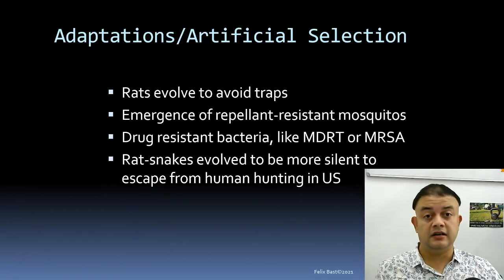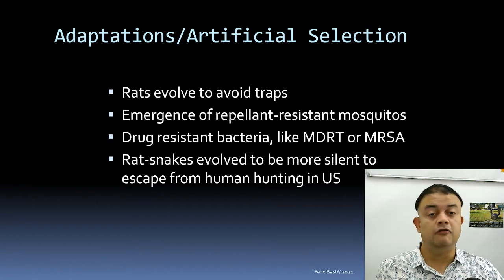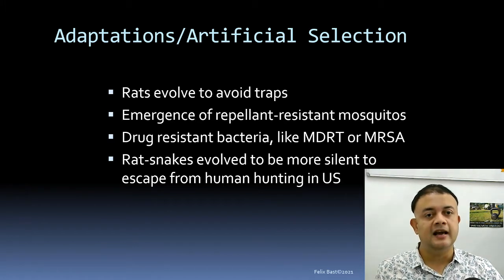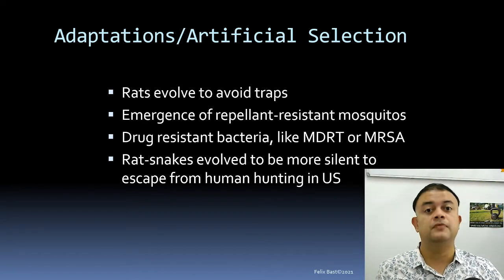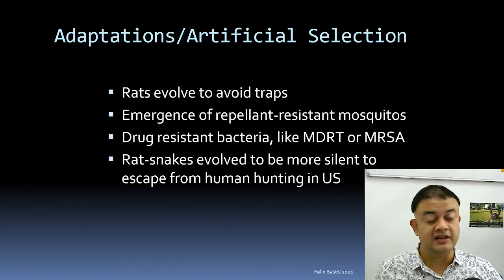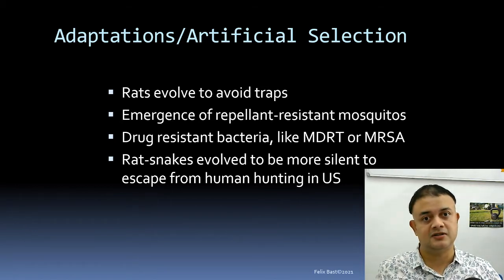Post-COVID-19, there is a growing detection of tuberculosis prevalence in recovered patients. We still have to deal with tuberculosis, and the only treatments are penicillin or other antibiotics. But many forms of tuberculosis can no longer be treated with antibiotics because of this artificial selection.